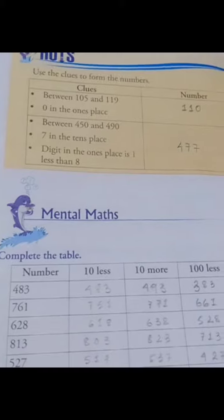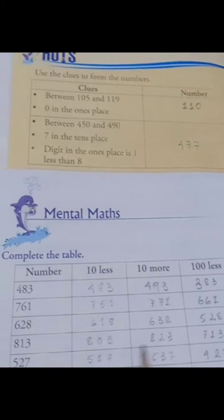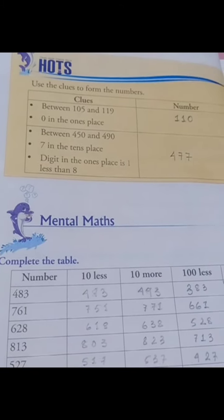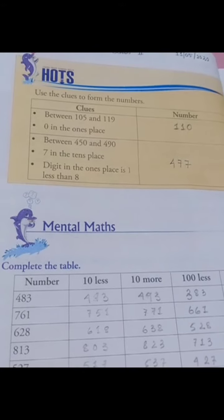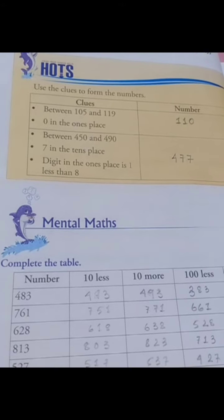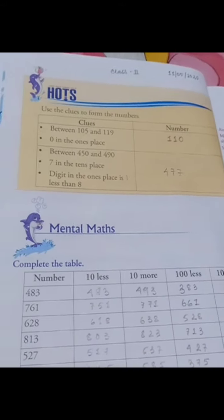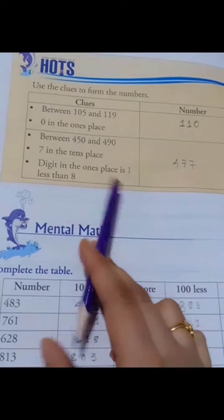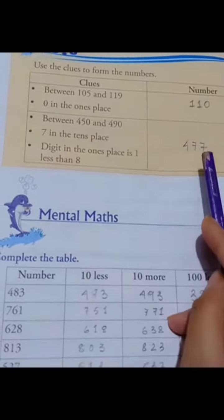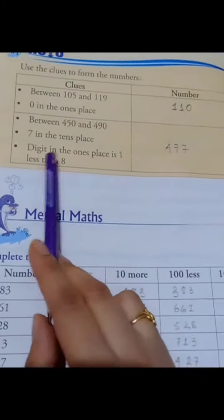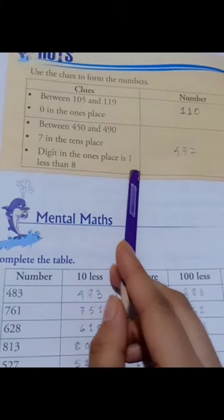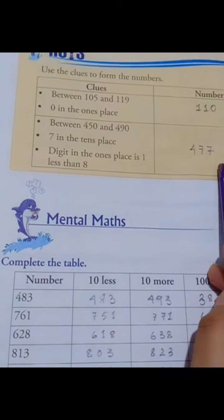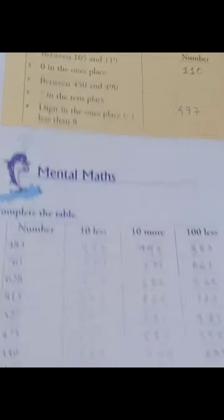Next: the number is between 450 and 490, with 7 in the tens place, and the digit in the ones place is less than 8. The number has 7 in the tens place, but the digit in the ones place is less than 8, so the number is 477.